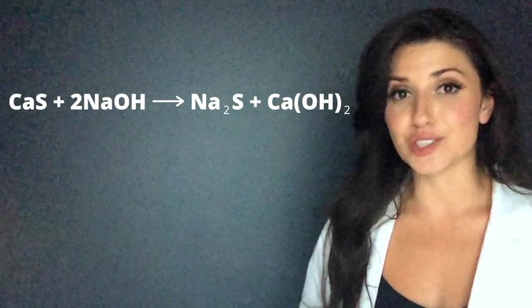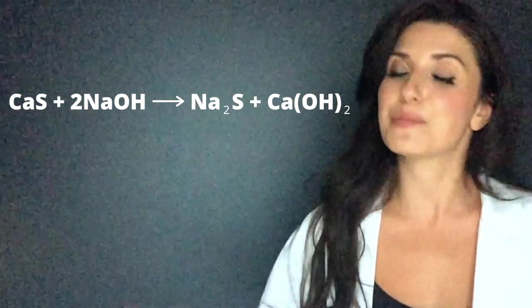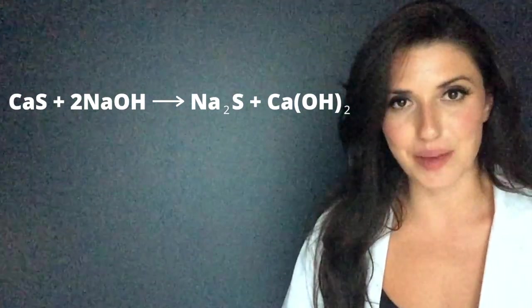So calcium hydroxide is going to be insoluble, form a solid in the solution, and be the precipitate. So this reaction does have a precipitate, and it's calcium hydroxide.